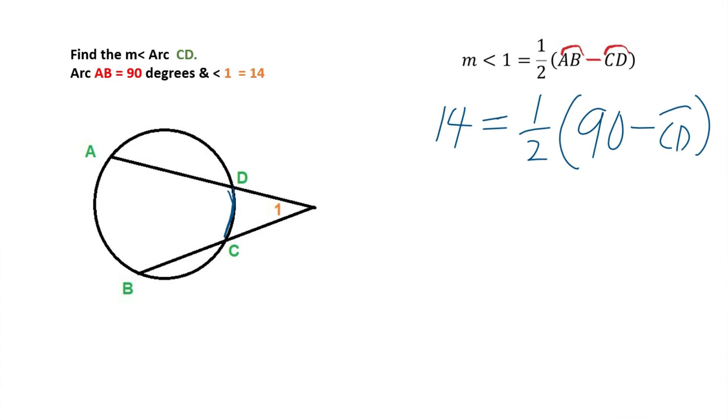So what we do here is we're going to distribute. One-half times 90 is equal to 45. One-half times our arc of CD is the arc CD over 2, and we already know our measure for angle one is 14. So we're going to go ahead and subtract. We're going to subtract 45 from both sides, and here we're left with negative 31. This cancels and this is equal to negative our arc over 2.